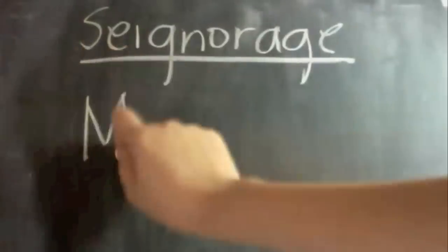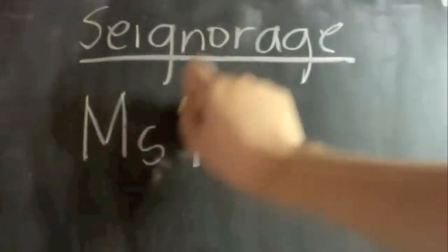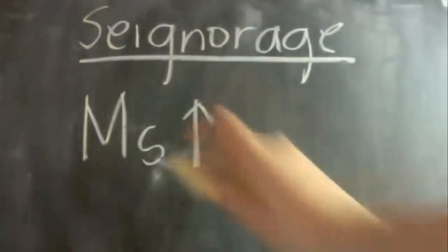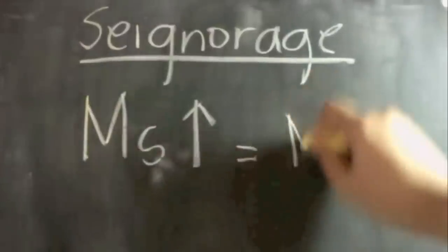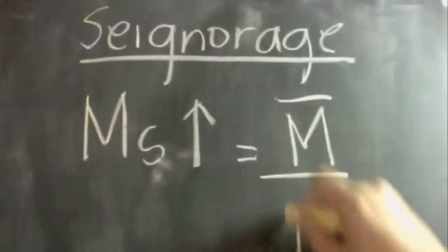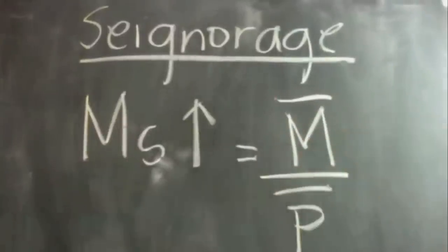In printing more money, the money supply, or the money that is available in the market, will definitely go up. Your money supply is given by the equation m bar over p bar, where m is your fiat money and p are your prices.